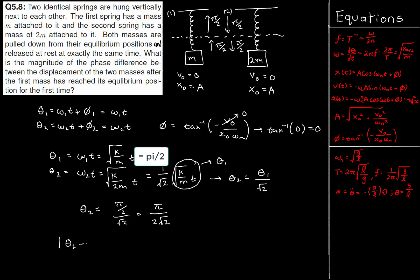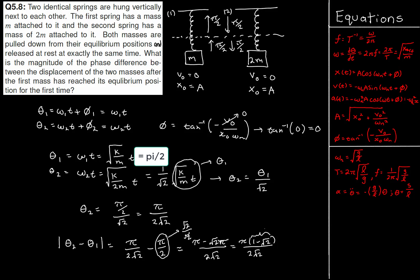The magnitude of the phase difference is |theta_2 minus theta_1| equals |pi/(2*sqrt(2)) minus pi/2|. Multiplying the second term top and bottom by sqrt(2)/sqrt(2) to combine fractions, then factoring out pi: we get pi*(1 minus sqrt(2)) over 2*sqrt(2). Since 1 minus sqrt(2) is negative — sqrt(2) is approximately 1.41 — we flip the sign for the absolute value, giving the final answer: pi*(sqrt(2) minus 1) over 2*sqrt(2).